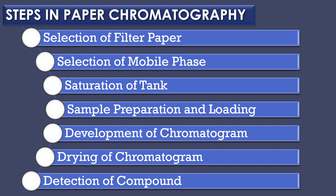There are seven steps in paper chromatography: selection of filter paper, selection of mobile phase, saturation of tank, sample preparation and loading, development of chromatogram, drying of chromatogram, and finally detection of compound.